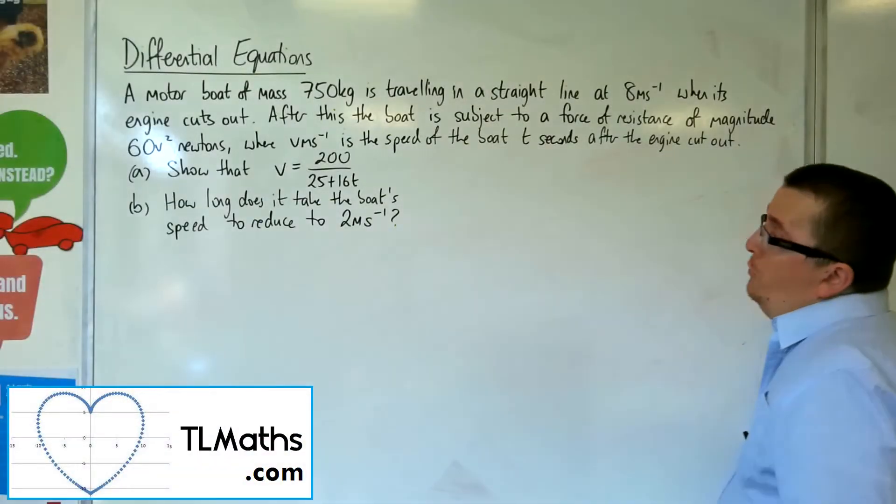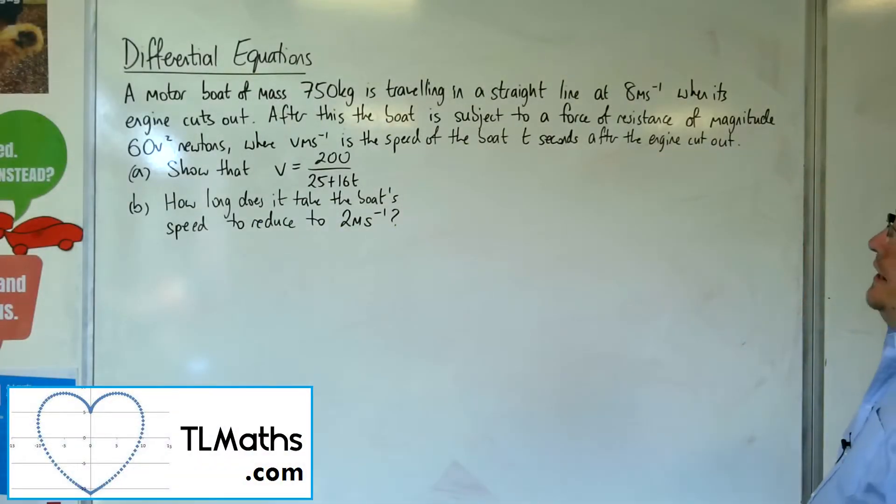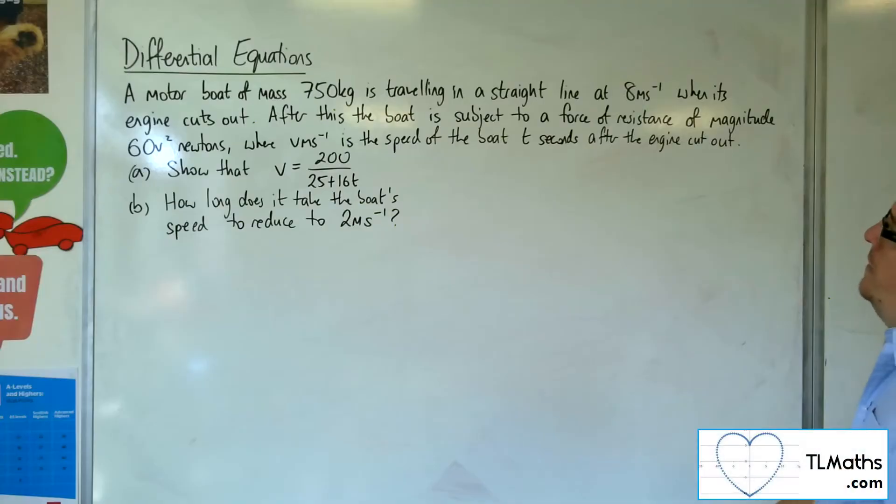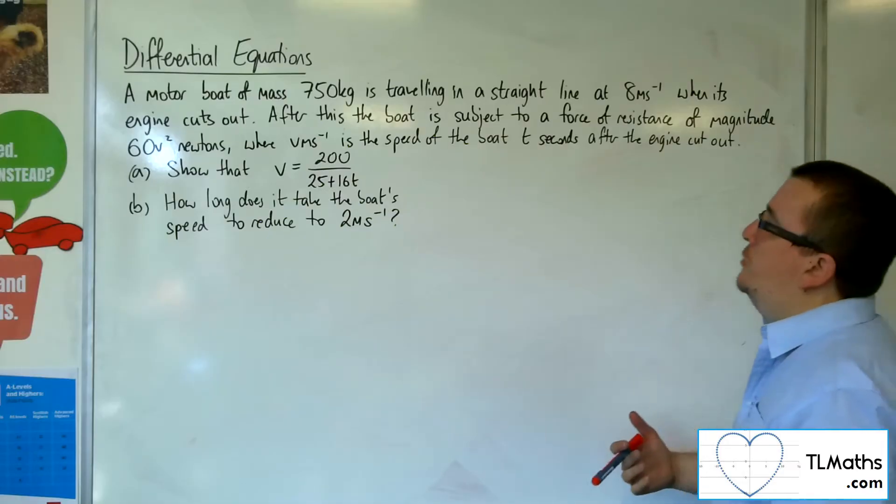In this problem, we've got a motorboat of mass 750 kilos, traveling in a straight line at 8 metres per second when its engine cuts out. After this, the boat is subject to a force of resistance of magnitude 60V squared newtons, where V metres per second is the speed of the boat T seconds after the engine cuts out.